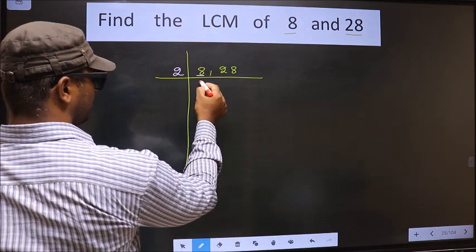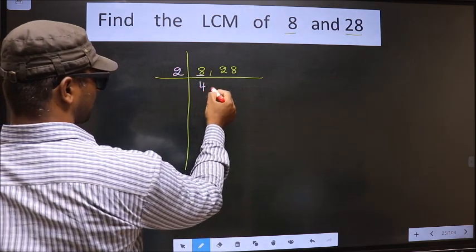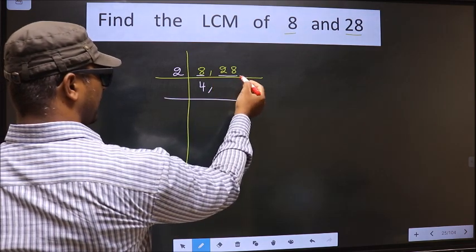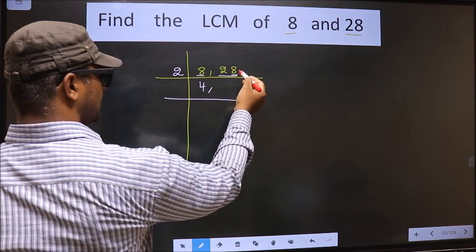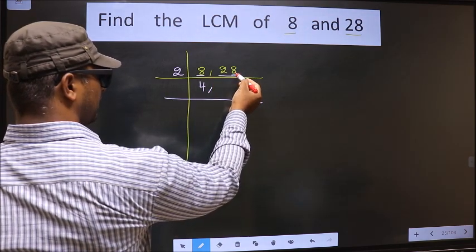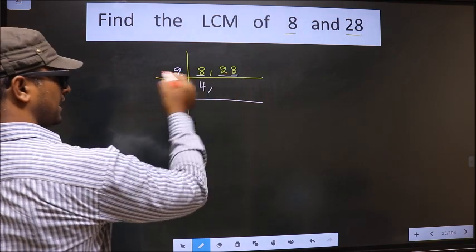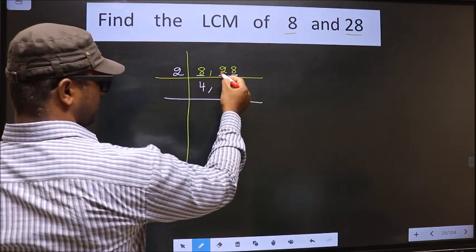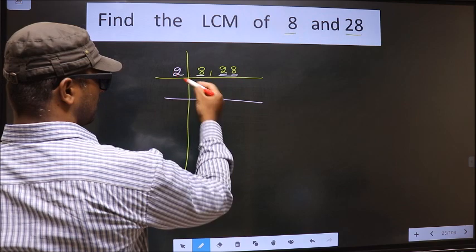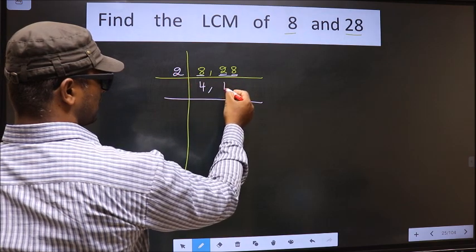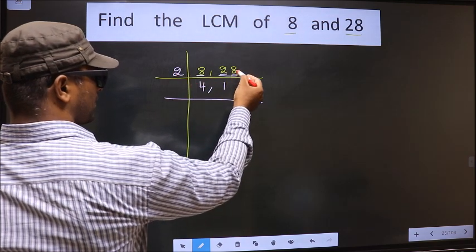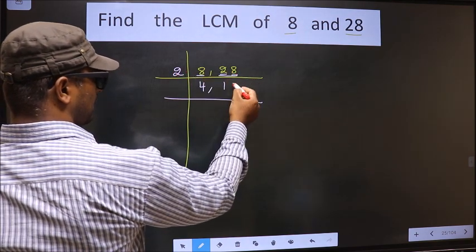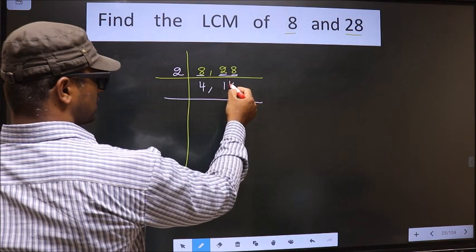8 is 2 fours are 8. Now the other number 28 — last digit 8, so this number is divisible by 2. Here, the first number is 2: 2 ones are 2. The other number is 8: 2 fours are 8.